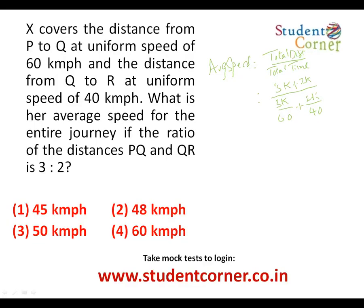Now let us solve. The time for 3k distance is 3k/60, which simplifies to k/20. The time for 2k distance is 2k/40, which is also k/20, giving k/10 in total. So average speed is 5k divided by (k/20 + k/20). That is 5k divided by k/10. K gets cancelled and 5 into 10 is 50. Therefore the average speed is 50 km per hour.